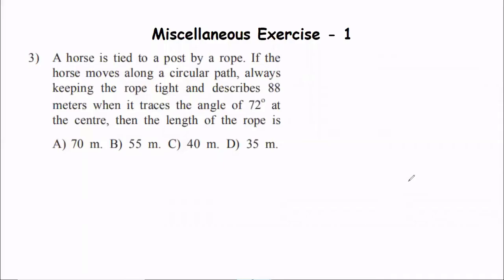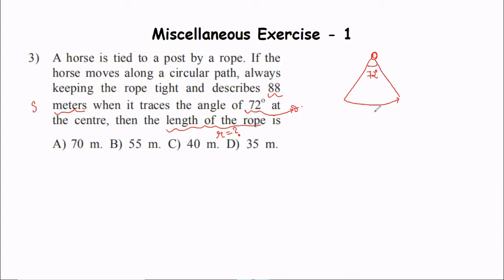Third question: A horse is tied to a post by a rope. The horse moves along a circular path keeping the rope tight and describes 88 meters — so 88 meters is the arc length s. The length of the rope, which acts as radius r, is unknown. The horse traces an angle of 72 degrees at the center, which is theta. We apply s = rθ, so θ must be in radians.